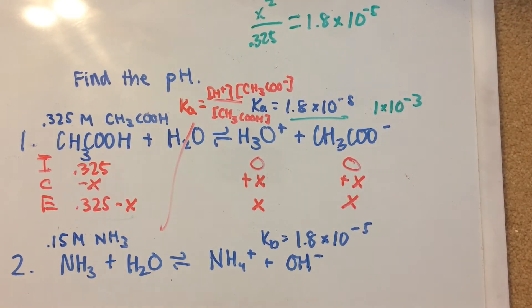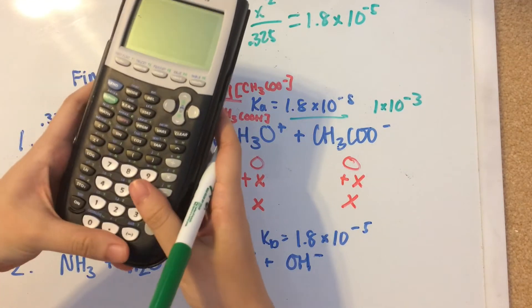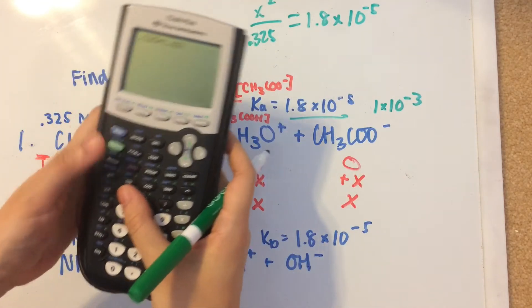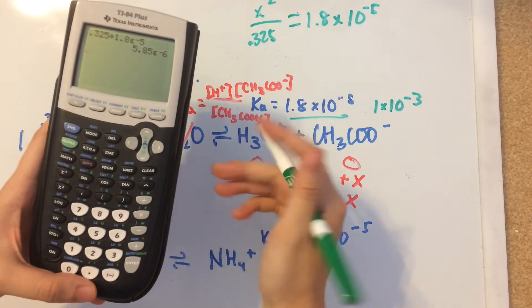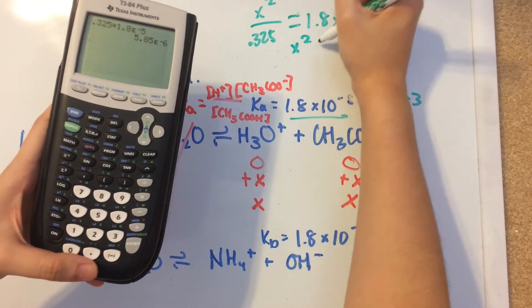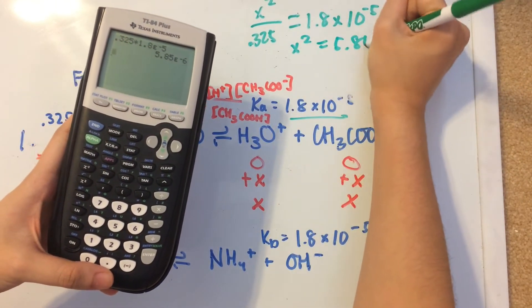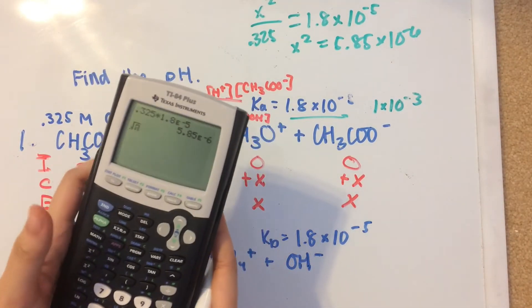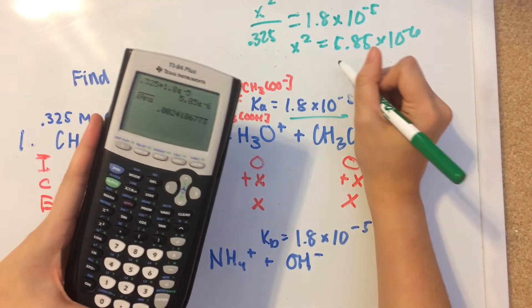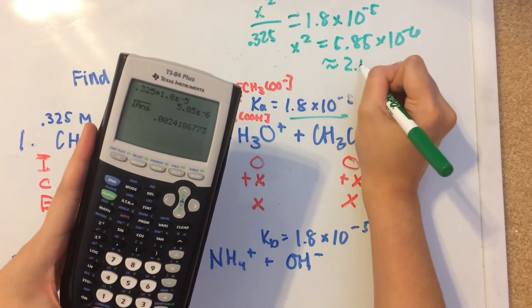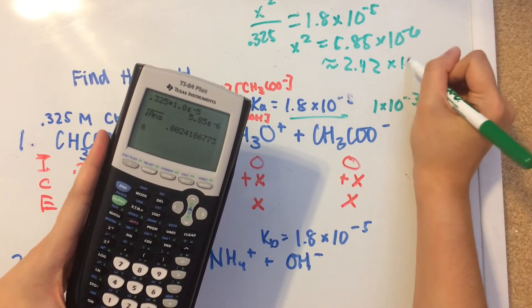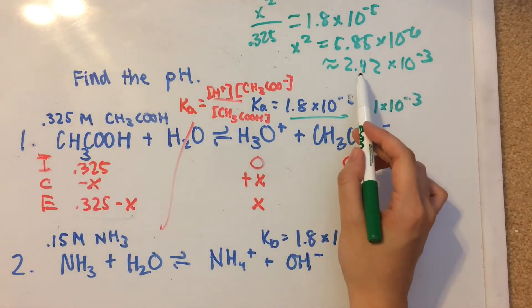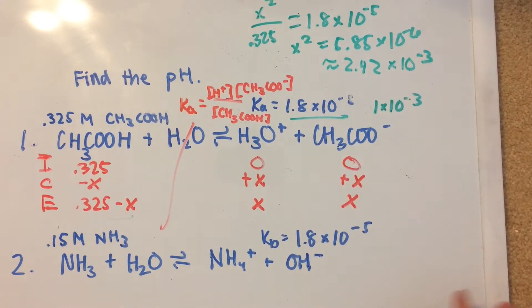So now it's just some really simple math. We'll have 0.325 times 1.8 times 10 to the negative fifth. So x squared equals 5.85 times 10 to the negative sixth. Then we take the square root of that, which gives us about 2.42 times 10 to the negative third. So x equals 2.42 times 10 to the negative third.